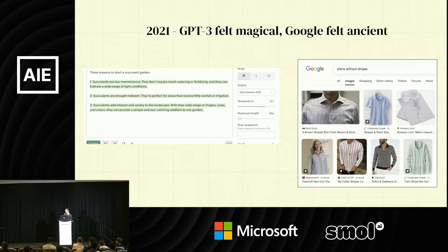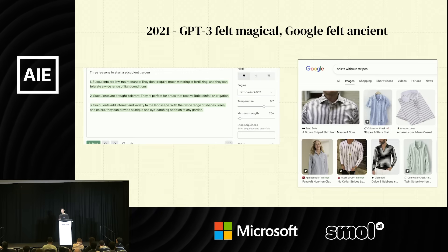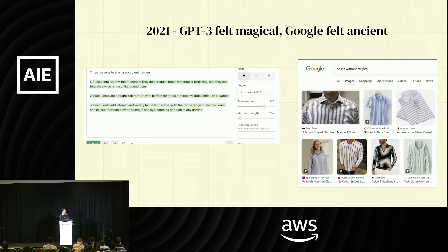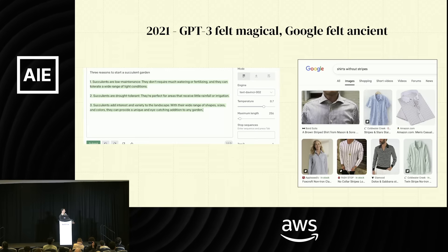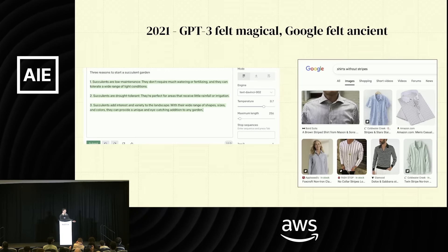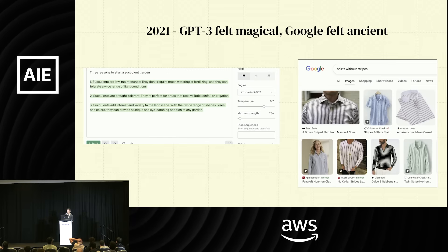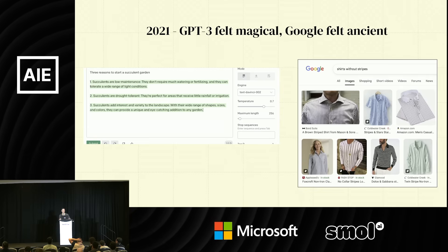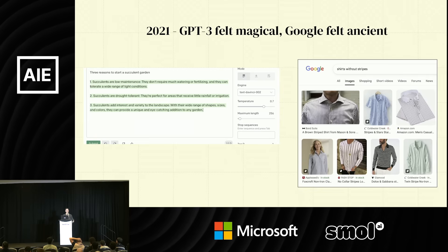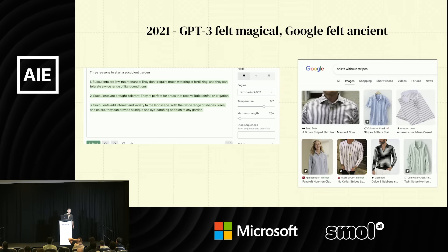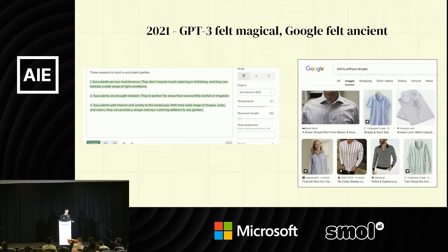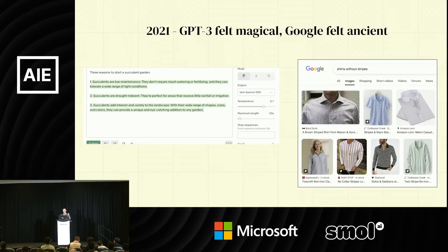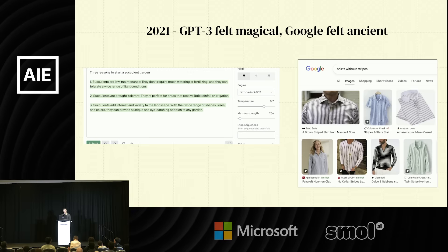Our story now skips 23 years to 2021. By this point I was conscious, barely. I noticed that GPT-3 had recently come out, and it was this magical thing where you could input a whole paragraph explaining exactly what you want, and it would really understand the subtleties of your language and give you an output that exactly matched. It's hard to remember how magical this was, but it was really magical in 2021.